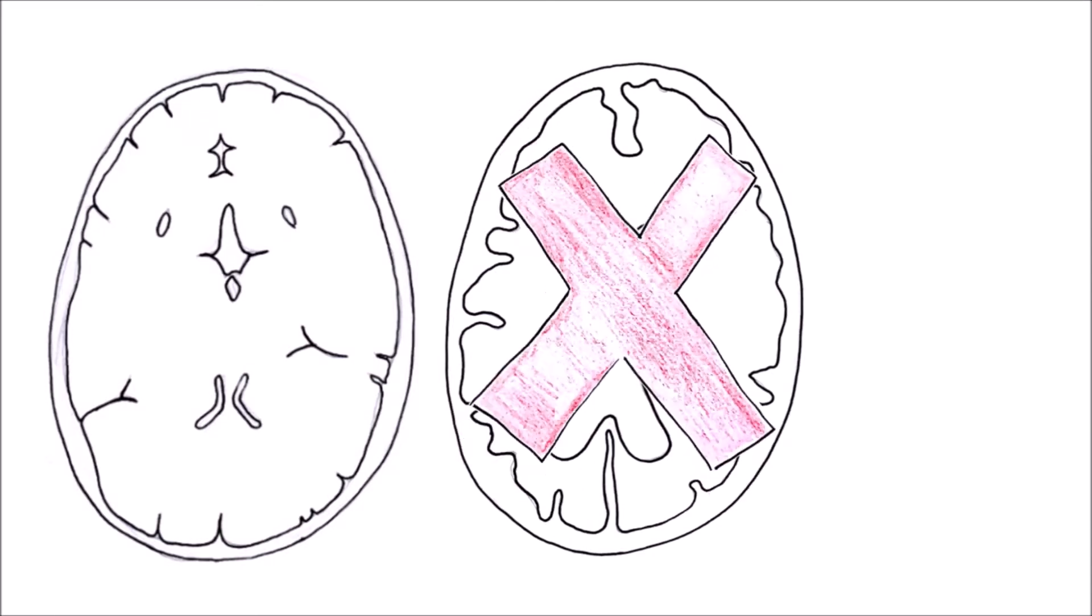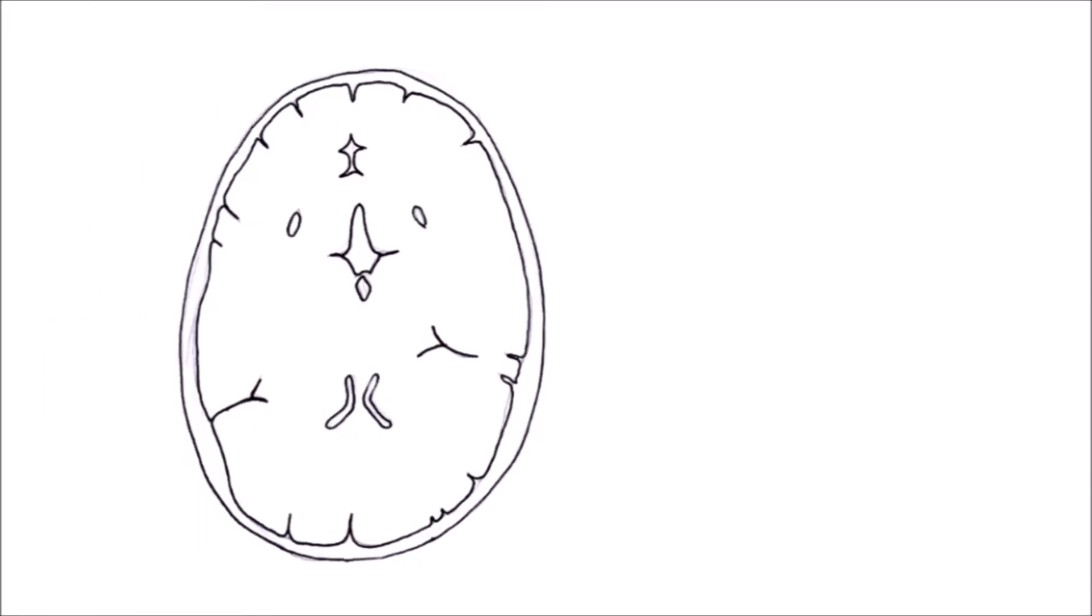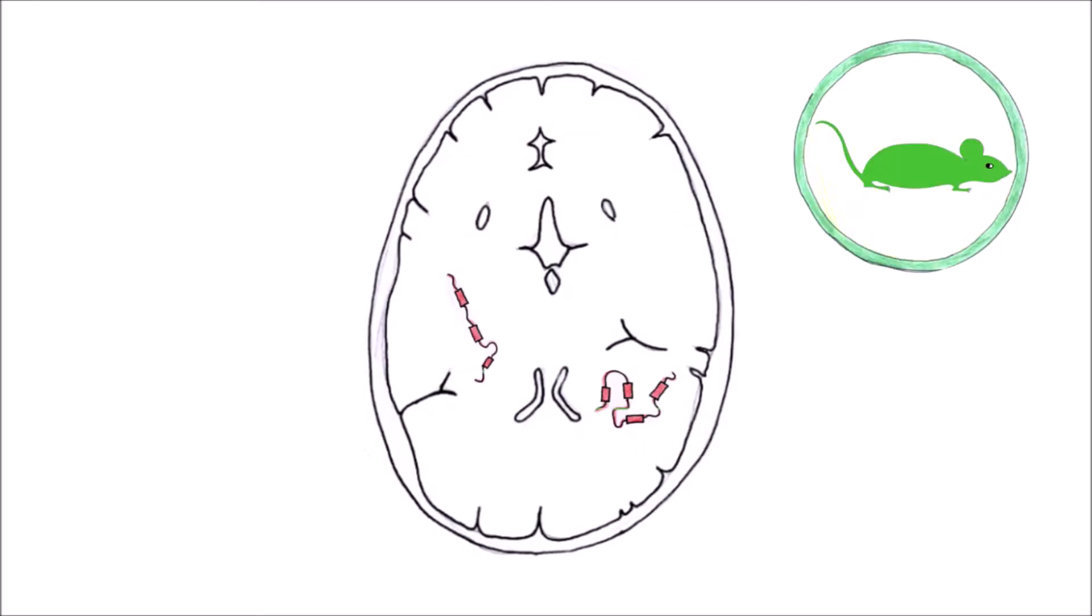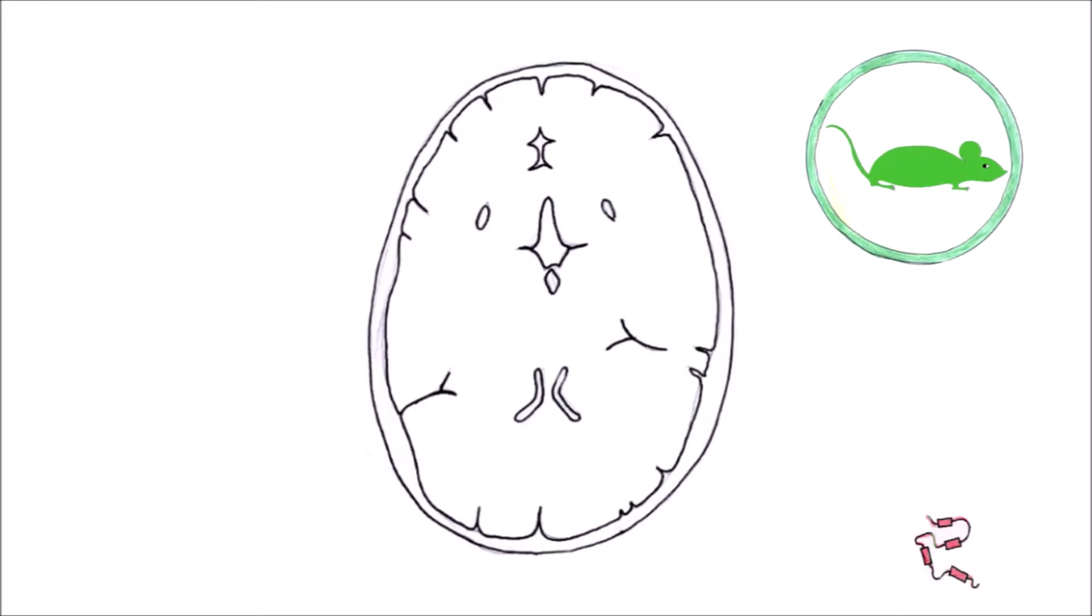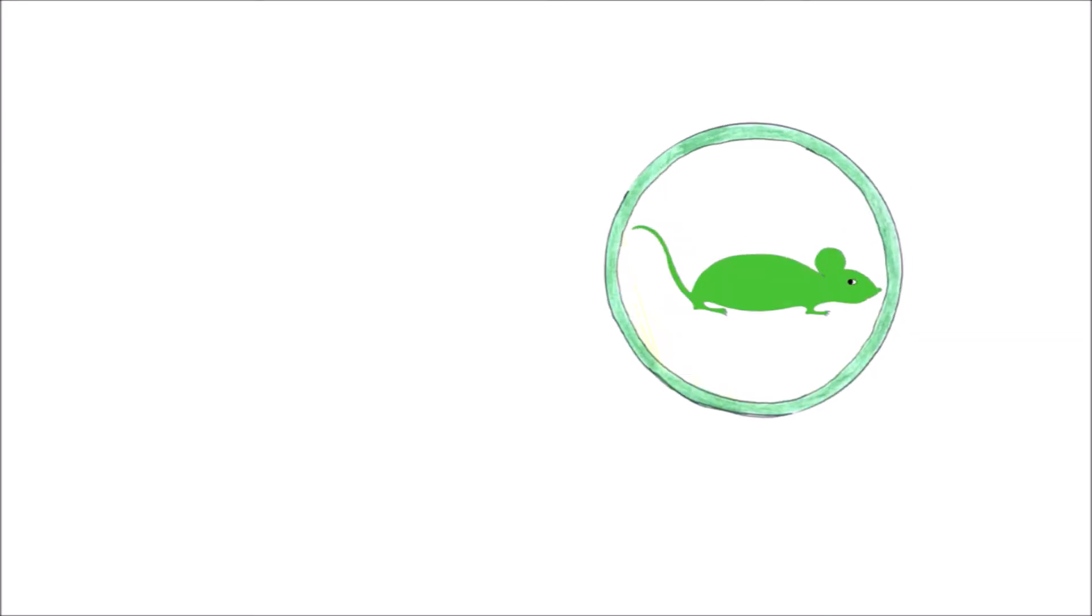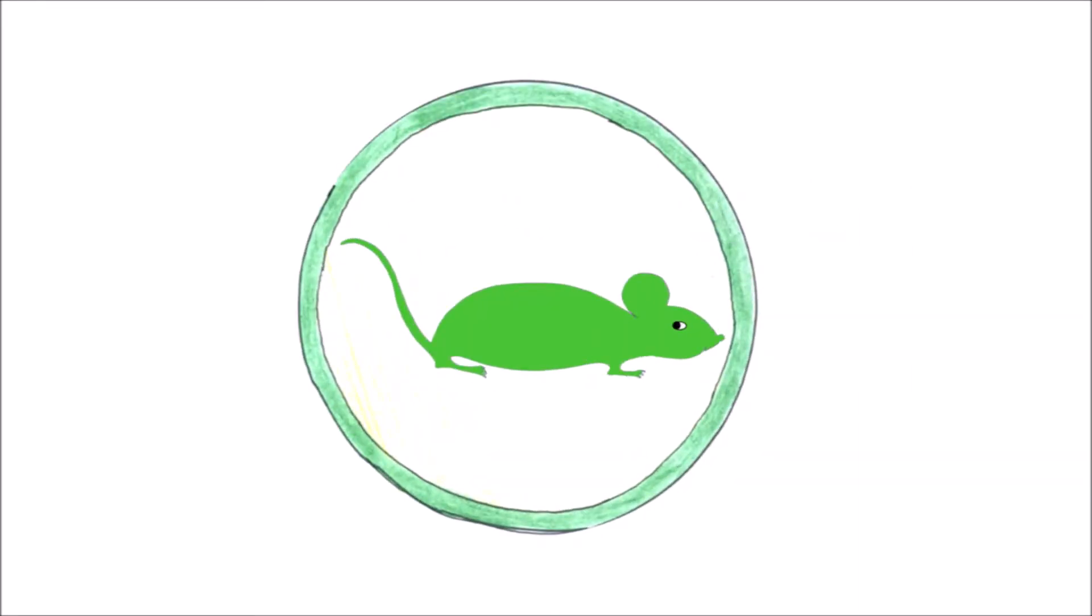Nevertheless, animals in torpor are not harmed by tau. As soon as they wake up, the proteins are removed. This doesn't happen in Alzheimer's disease. Torpor is therefore able to do what our current treatment for Alzheimer's disease cannot do: to clean up abnormal tau protein. This means that in the future, torpor could play a role in the treatment of Alzheimer's disease.